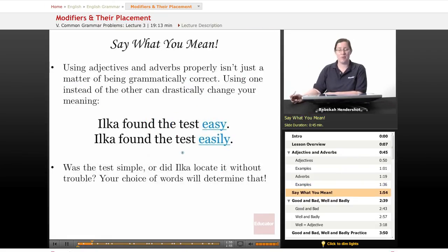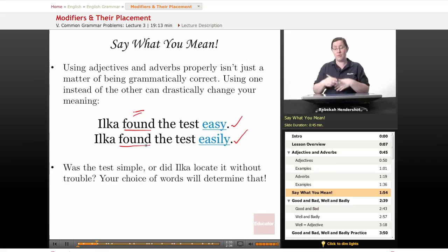Say what you mean. Using adjectives and adverbs properly isn't just a matter of being grammatically correct. This isn't just about being proper. It's about being clear. Using one of them instead of the other can drastically change your meaning. For example, Ilka found the test easy, Ilka found the test easily. Your problem here is the verb found. It can be an action verb, I look for something and I find it. It can also be a linking verb, indicating someone's opinion of something or the perception of it. So, if Ilka found the test easy, well, then it's a linking verb and the test was simple. If Ilka found the test easily, found is an action verb and she located it without having any difficulty. So, your choice of words determines your meaning.